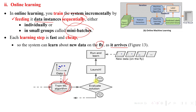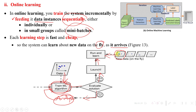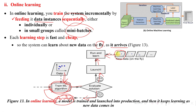We evaluate the performance of the model. If the results are good, we learn from them. Otherwise, we analyze the problem and go back to the training stage. Once we get new data, our model automatically trains again — this is simply called online learning.